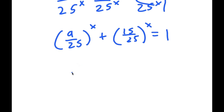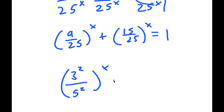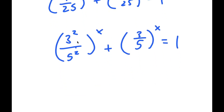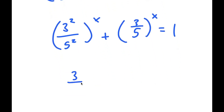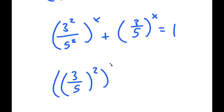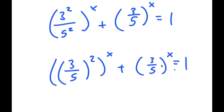Now 9 over 25 I can rewrite as 3 squared over 5 squared, and 15 over 25 is the same thing as 3 over 5. So 3 squared over 5 squared is the same thing as 3 over 5 squared. Now I have 3 over 5 to the power of x, squared, plus 3 over 5 to the power of x is equal to 1.